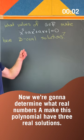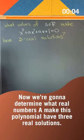Now we're going to determine what real numbers a make this polynomial x³ + ax² + ax + 1 = 0 have three real solutions.